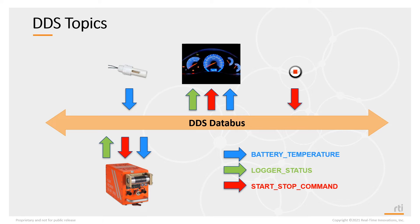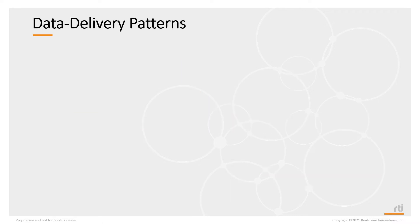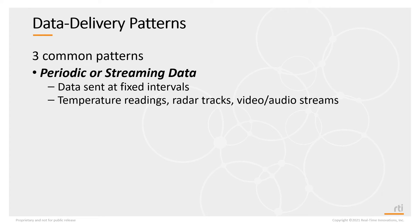Each individual data stream in DDS is called a DDS topic. Now that we have the data for a system divided into DDS topics, we need to understand how the data for each topic behaves. There are three common patterns. First is periodic or streaming data — this data is sent periodically at fixed intervals. It could be temperature data from any analog sensor, it could be radar tracking aircraft and periodically sending out current position, or video and audio streams.